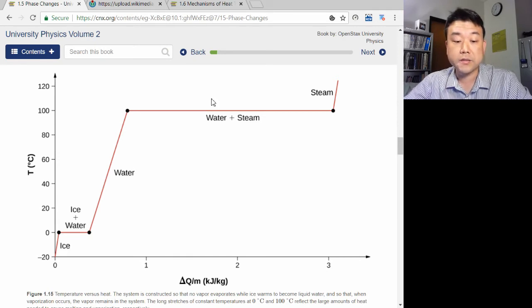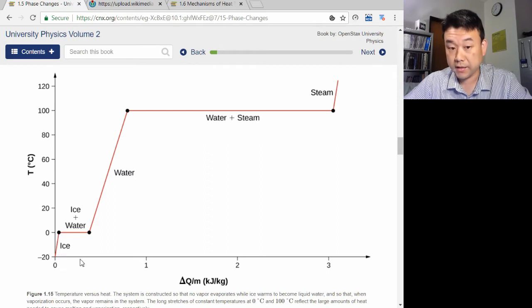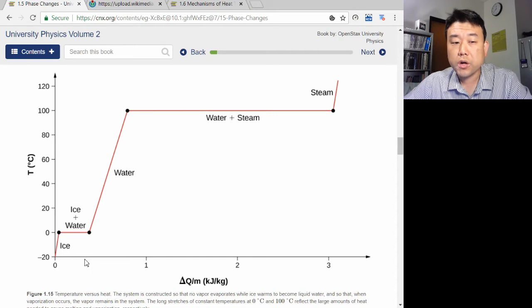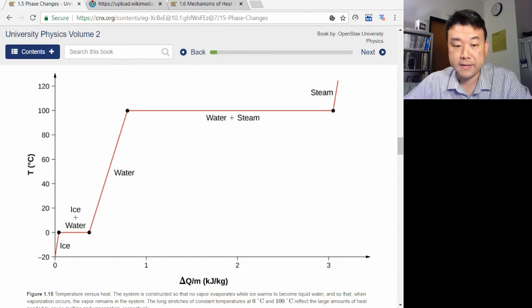Now, here is what I want you to consider. If, as you go along the horizontal axis, you are adding heat, why isn't that added heat showing up as temperature of the ice water rising, or temperature of water and steam rising?